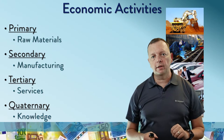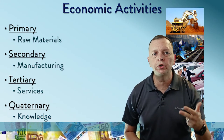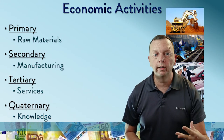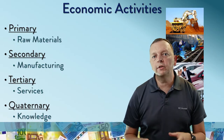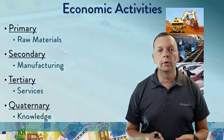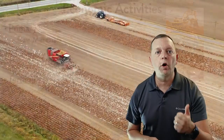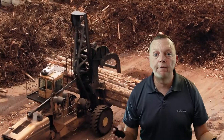Now, there are four economic activities. There is primary, secondary, tertiary, and quaternary. Primary economic activities is the production of raw materials. We're talking about farming, mining, drilling, and fishing.